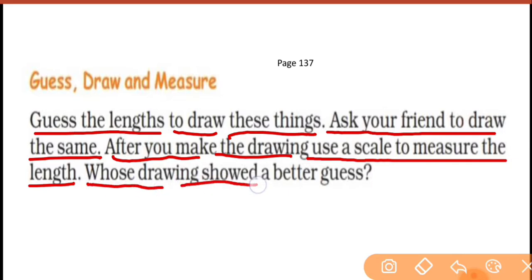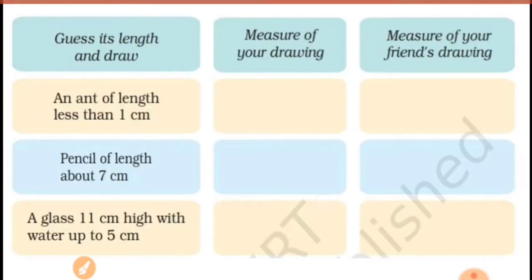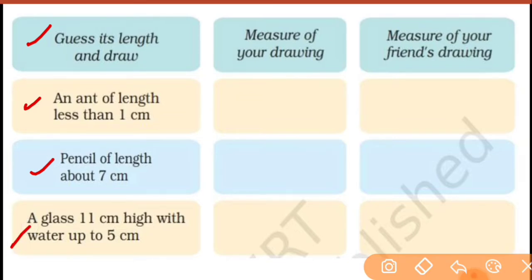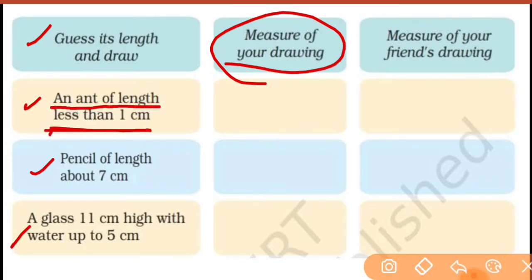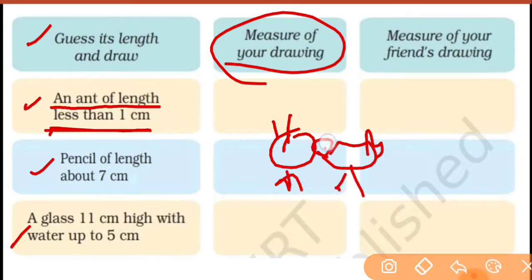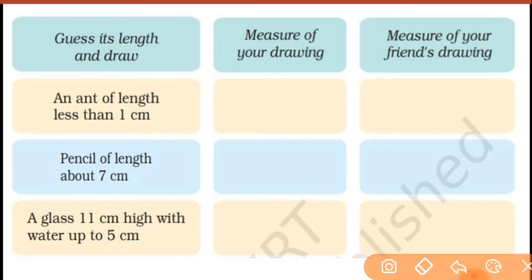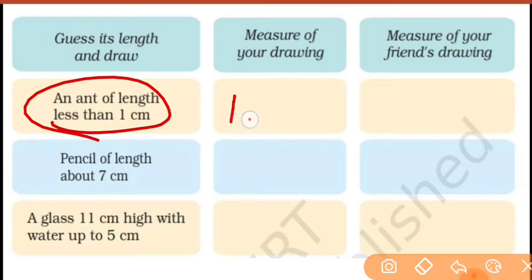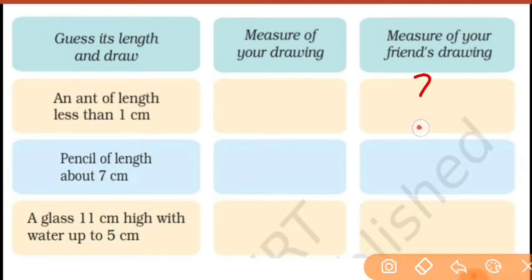After you make the drawing, use a scale to measure the length and see which drawing showed a better guess. Here is the table — the things are: ant, pencil, and glass. You have to draw an ant of length less than one centimeter. If you draw an ant, you can draw one that is about one centimeter so you can measure it.